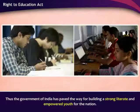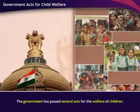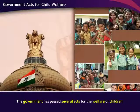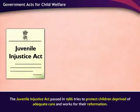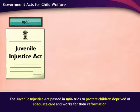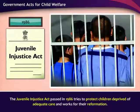Thus, the government of India has paved the way for building a strong, literate and empowered youth for the nation. The government has passed several acts for the welfare of children. The Juvenile Justice Act, passed in 1986, tries to protect children deprived of adequate care and works for their reformation.